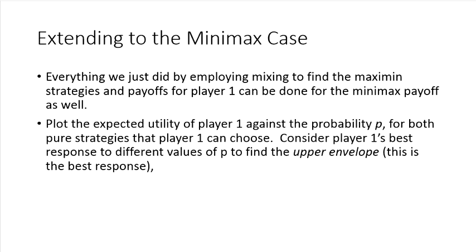What we're going to wind up doing now is we would plot the expected utility of player one against the probability P, which is player two's strategy, and then we can consider what is the best response for player one for different values of P in order to find what I would refer to as the upper envelope of the graph. And this would correspond to player one's best response to various values of P. And you can do this for both of player one's pure strategies.